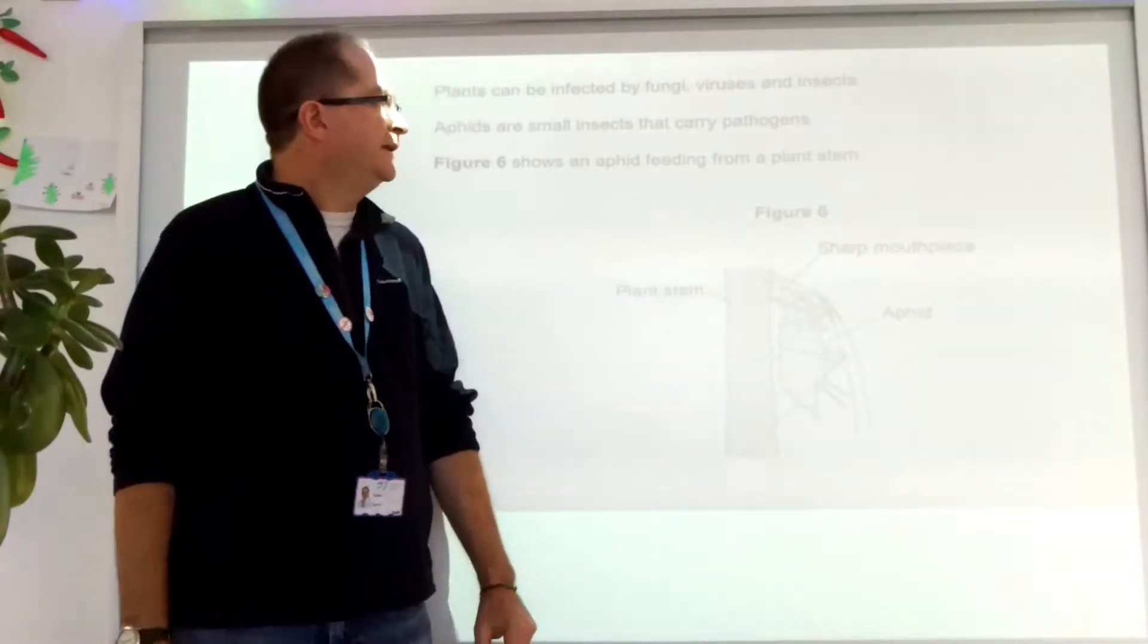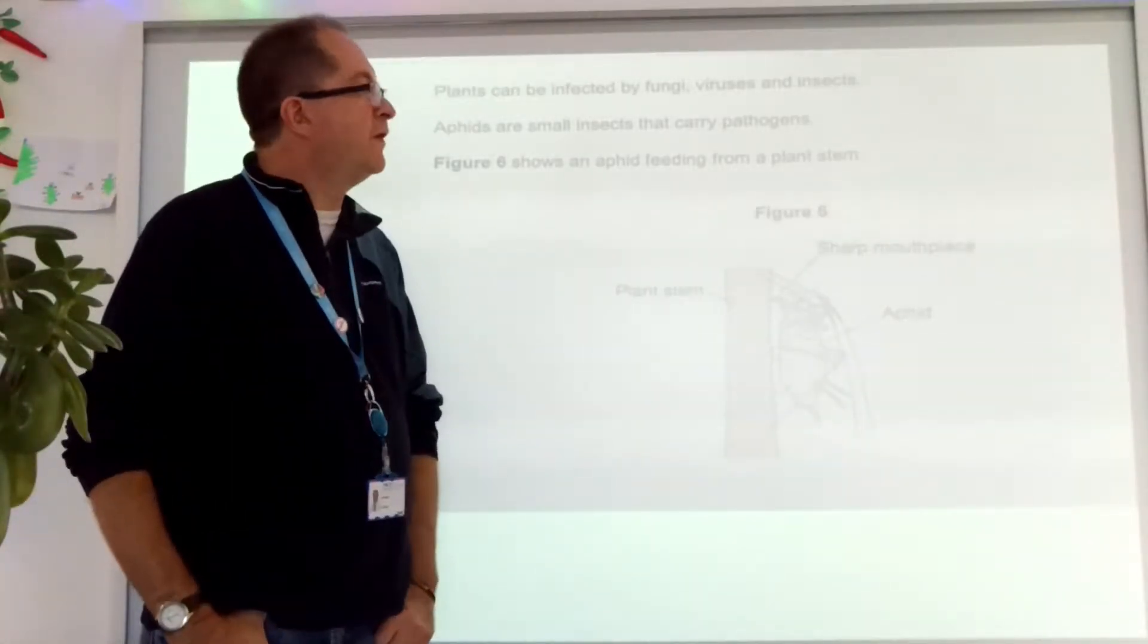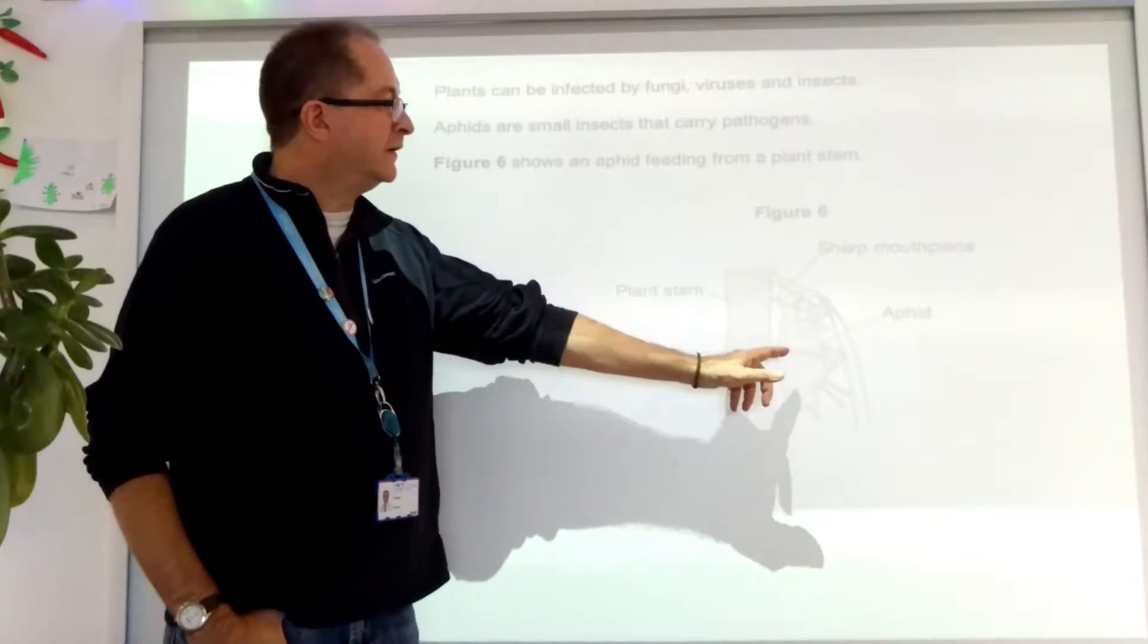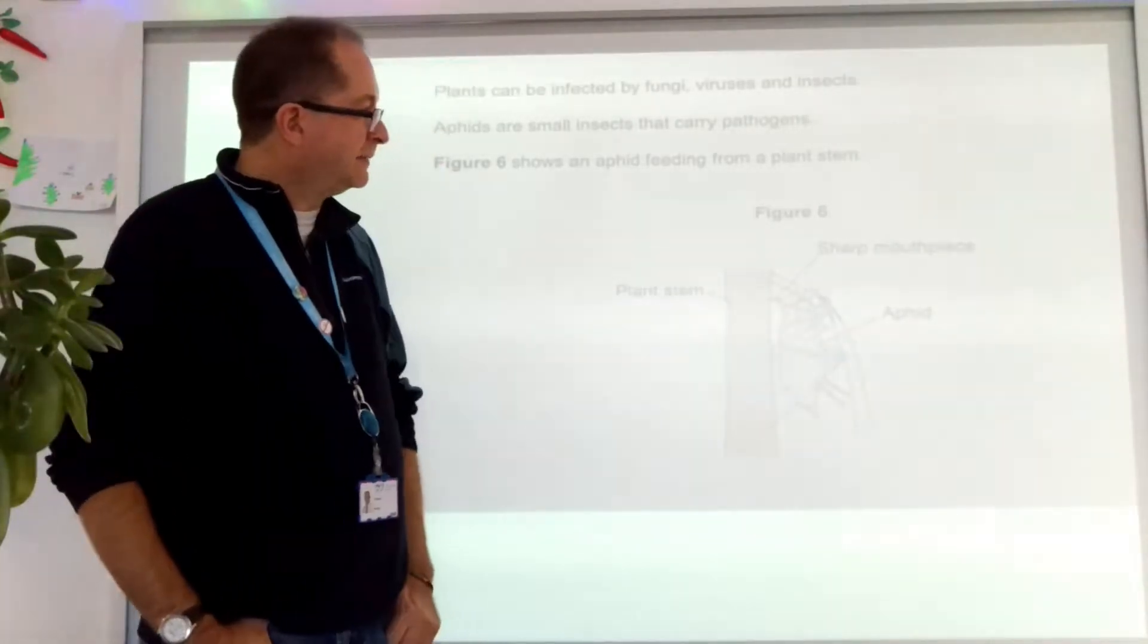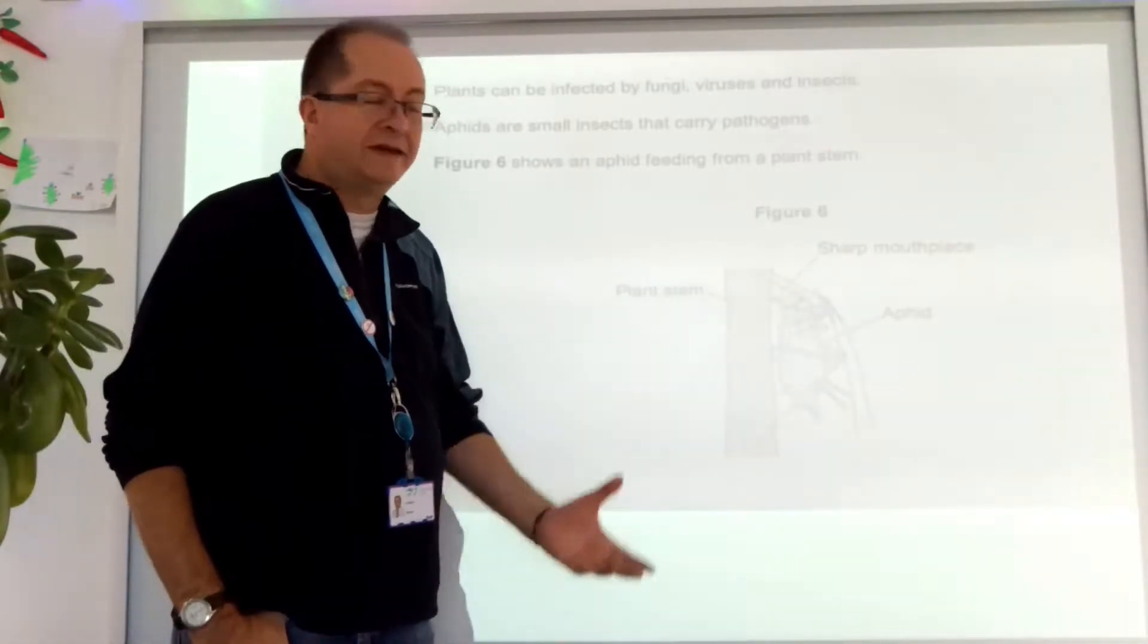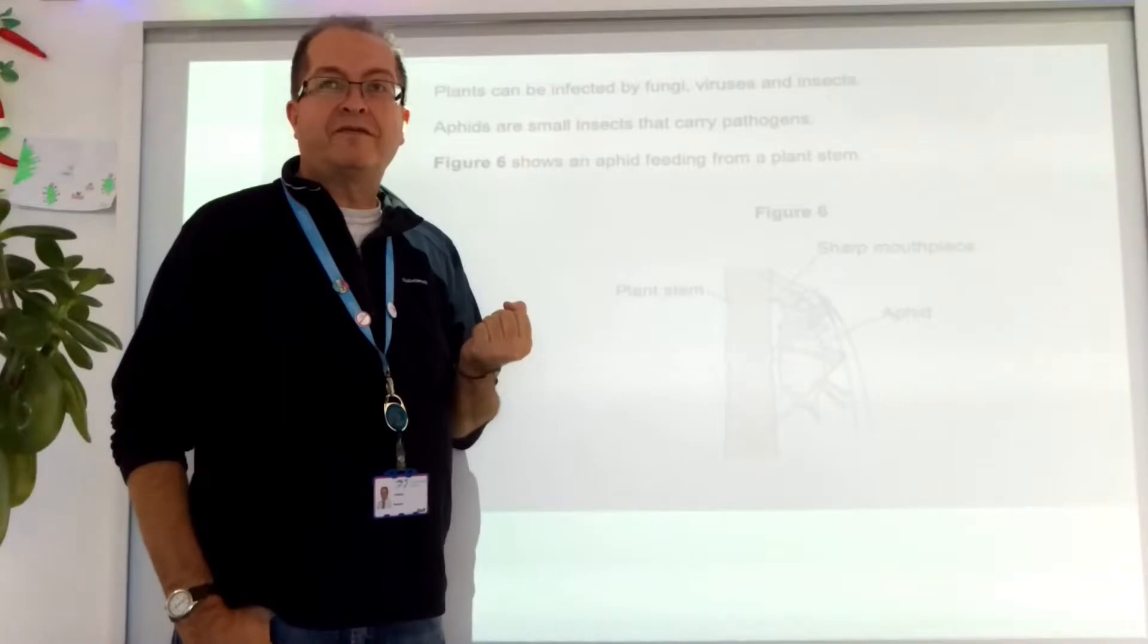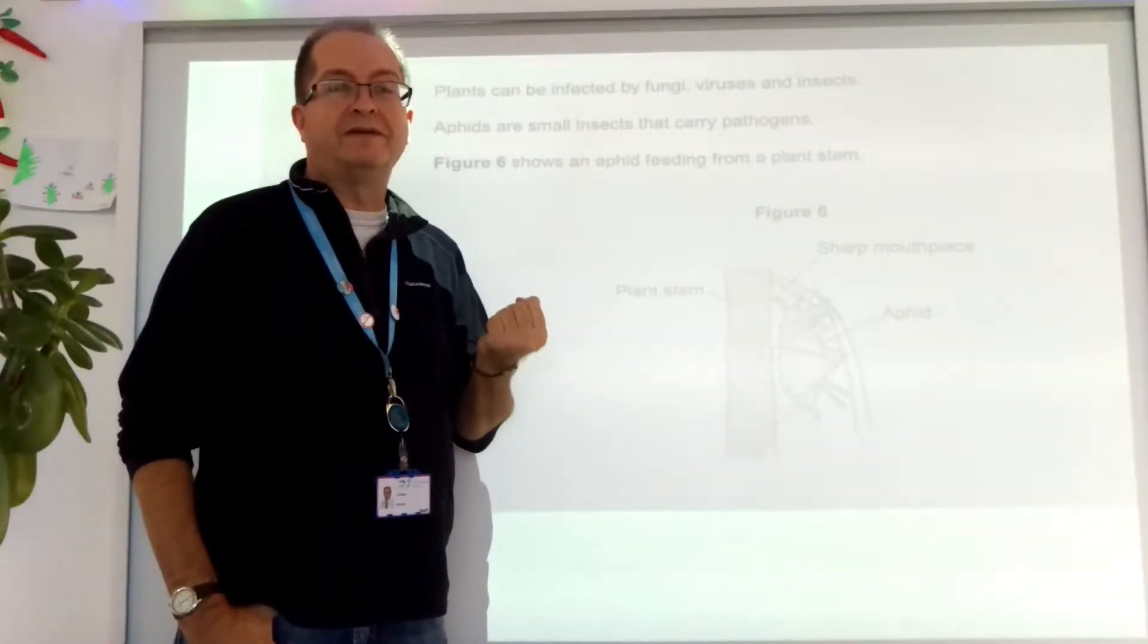So you open your exam booklet and you see this question. Plants can be infected by fungi, viruses and insects. Aphids are small insects that carry pathogens. Look at the diagram, here's an aphid. Figure 6 shows an aphid feeding from a plant stem. Good, that seems fair. So the aphid has punctured the plant stem with its mouthpiece and it's sucking out the juices, the cell sap. Maybe from the xylem, maybe from the phloem, we're not sure. But we're going to find out, the question is going to help us. So aphids, plants, that's what our question is about.